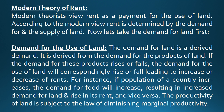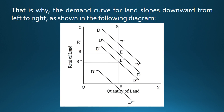Modern Theory of Rent. Modern theorists view rent as a payment for the use of land. According to the modern view, rent is determined by the demand for and the supply of land. The demand for land is a derived demand — it is derived from the demand for the products of land. If the demand for these products rises or falls, the demand for the use of land will correspondingly rise or fall, leading to increase or decrease of rents. For instance, if the population of a country increases, the demand for food will increase, resulting in increased demand for land and rise in its rent, and vice versa. The productivity of land is subject to the law of diminishing marginal productivity. That is why the demand curve for land slopes downward from left to right, as shown in the following diagram.